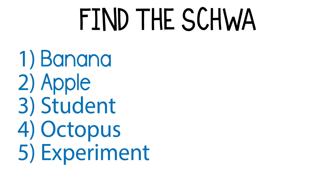Let's go through the answers. In 'banana,' it's the first A which is the schwa. In 'apple,' it's the E at the end. In 'student,' it's also the E. For 'octopus,' there are actually two — the second O and the U. And finally, it's the I in 'experiment.'